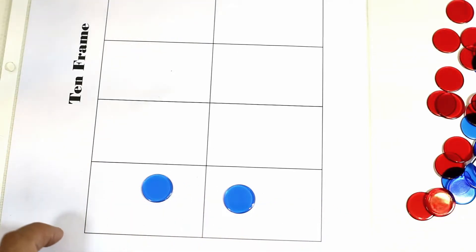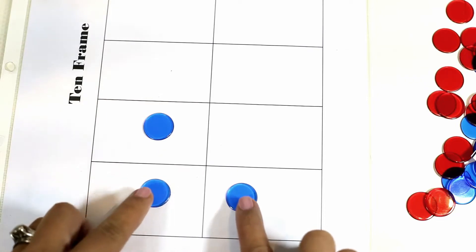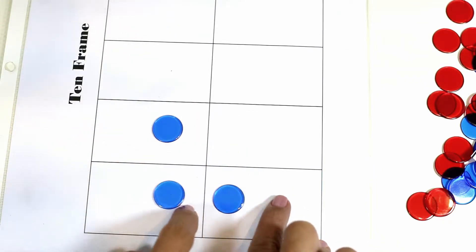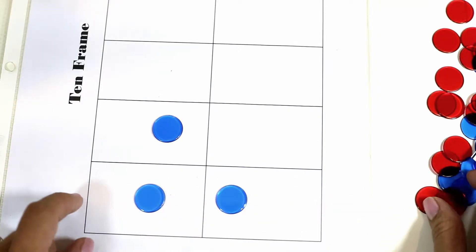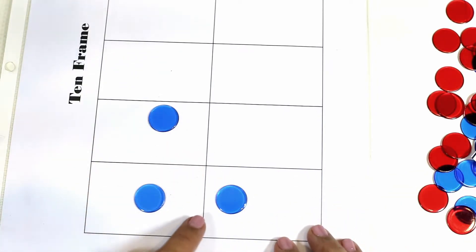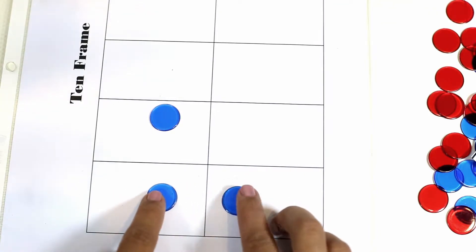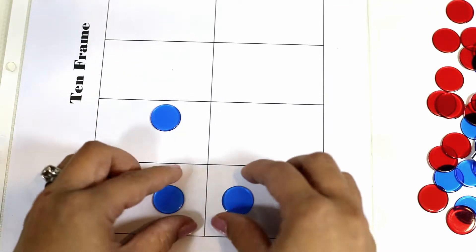If they put down three then they will notice that it is an odd number because one counter does not have a partner. So they can visualize using the ten frame right away what an odd and an even number looks like.